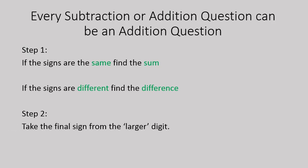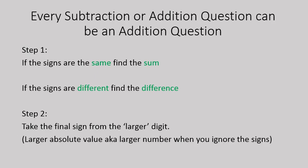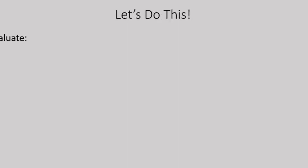Your final sign will come from the larger digit — and I put 'larger' in quotations there because it's not necessarily a larger number. It's technically the larger absolute value, but it just means the larger number when you ignore all of the signs. For example, negative one million and two: one million is a larger digit than two if we ignore the signs.